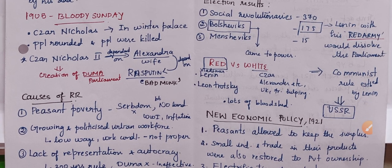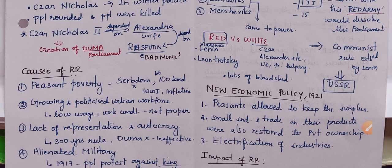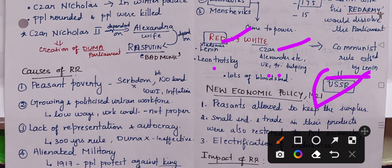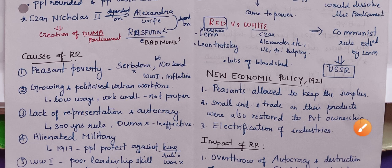There was a fight between the Reds versus the Whites. The Reds were supported by those supporting Vladimir Lenin and Leon Trotsky. The Whites were the Tsarists, supported by the UK and France. This led to communist rule established by Lenin, which led to the establishment of the USSR.